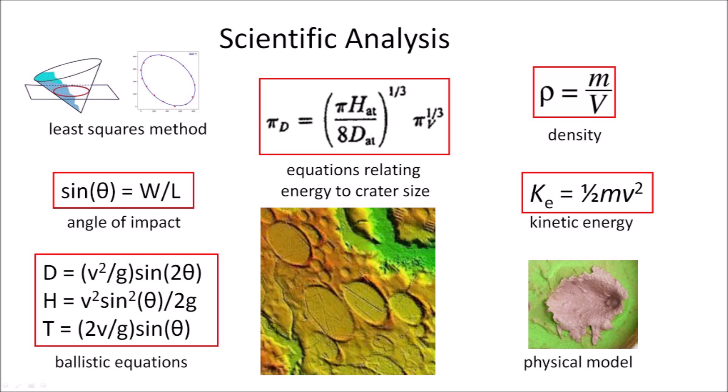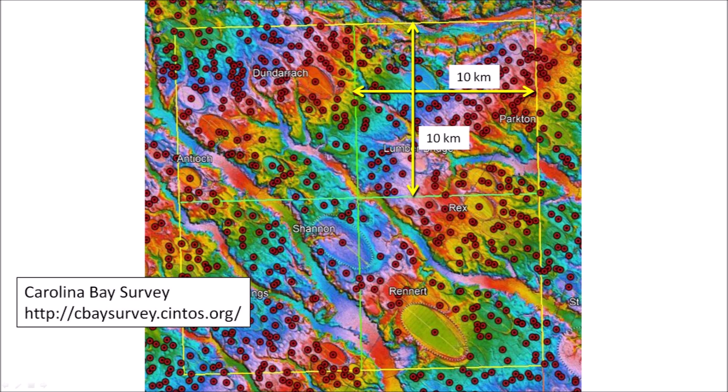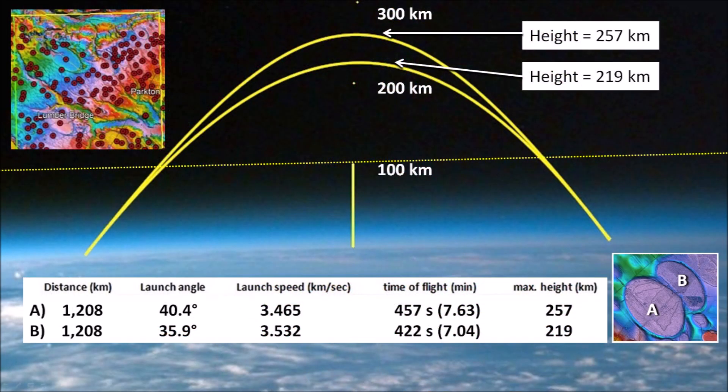We also need to test with a physical model to make sure that the hypothesis is based on reality. This is a LiDAR image centered around Shannon, North Carolina — an area with many Carolina Bays examined and catalogued by Michael Davias and marked with red dots. Each of the four squares measures 10 km on each side and has an area of 100 km². The idea is to calculate the ballistic trajectories for all the bays in each 100 km² area and then plot them to visualize them.